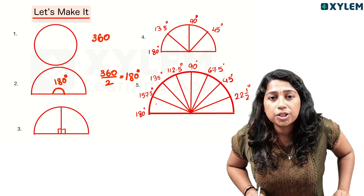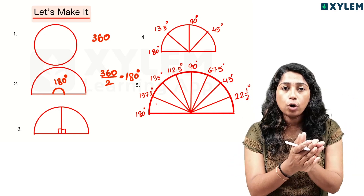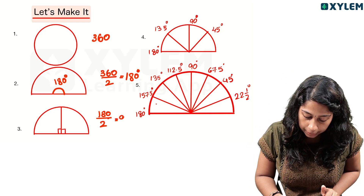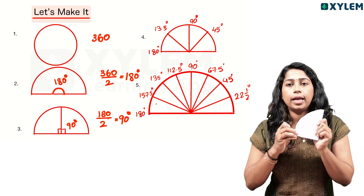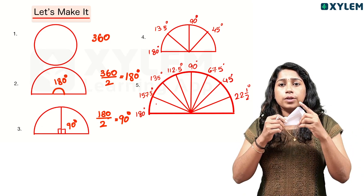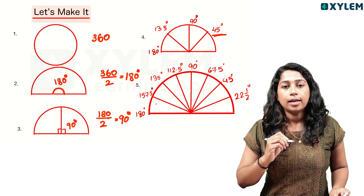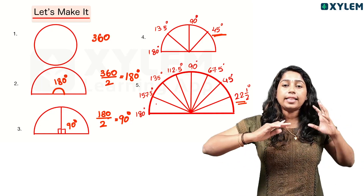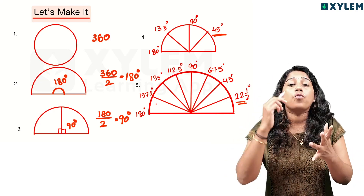If we need 180 degrees, we take the fold to get 180 degrees. Then, folding again gives us 90 degrees. Folding once more gives us 45 degrees.